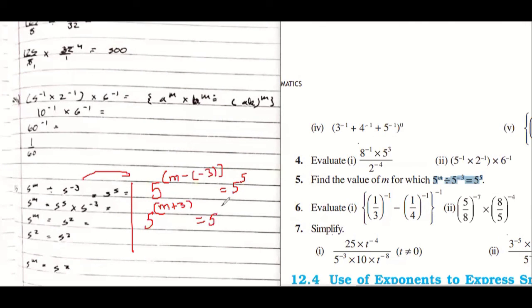Again same thing: as bases are same, powers are equated. Therefore m plus three equals to five. Now it's a linear equation: five minus three, m equals to two. Isn't it making the same thing?